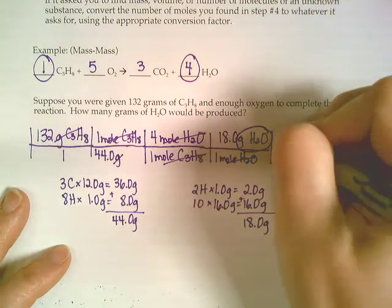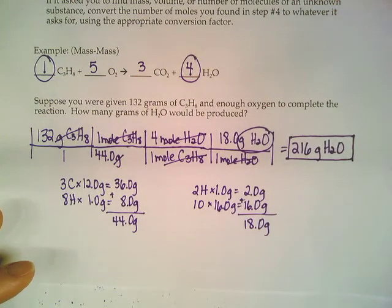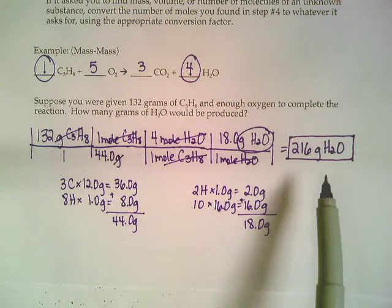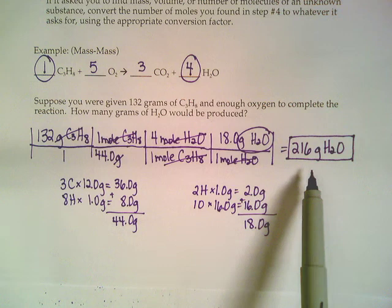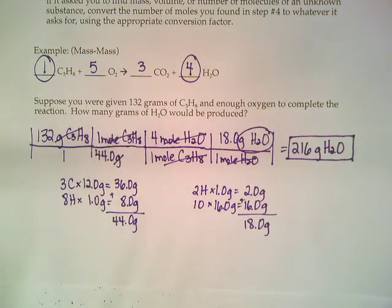So as soon as we hit that number, 216, the reaction would stop. You wouldn't be able to make 217 grams worth of water, because as soon as you hit that 216, you've completely run out of this 132 grams of C3H8. If you run out of one of your reactants, the reaction's going to stop. Just like if you were baking cookies and you ran out of eggs, you can't make a batch without one of the necessary ingredients.